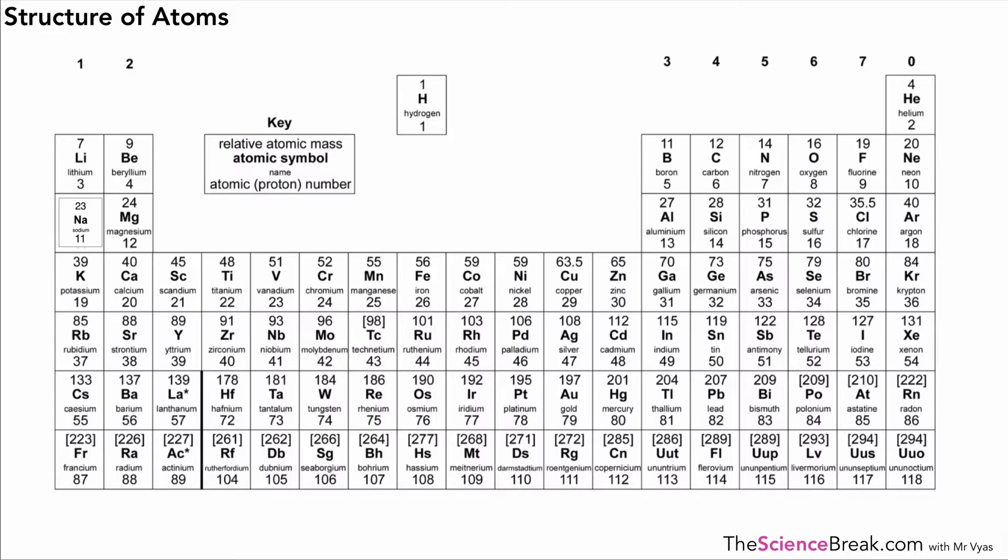Now we're going to look at how to draw an atom with the right number of protons, neutrons, electrons, and so on. Let's pick sodium as an example, using the key on the periodic table. You'll get a periodic table like this in the exam with that key, so you don't necessarily need to memorize what these things are, but you need to know what they tell you about the atom. We've got the relative atomic mass at the top, the atomic or proton number at the bottom, and the atomic symbol and name in each box.